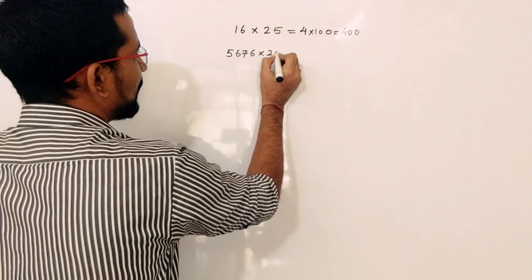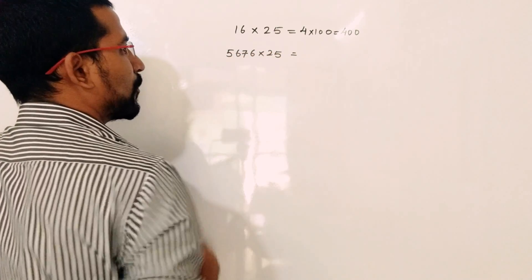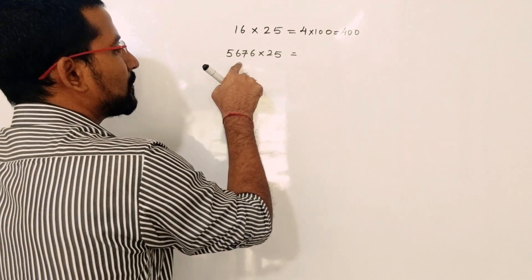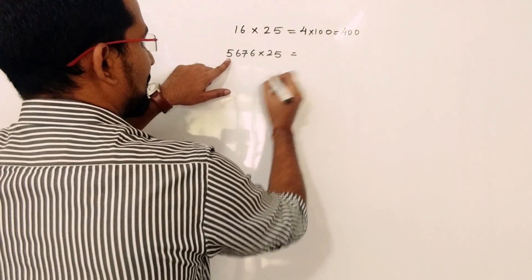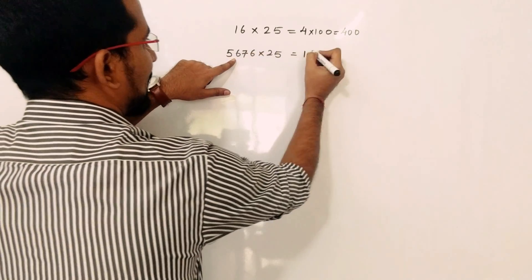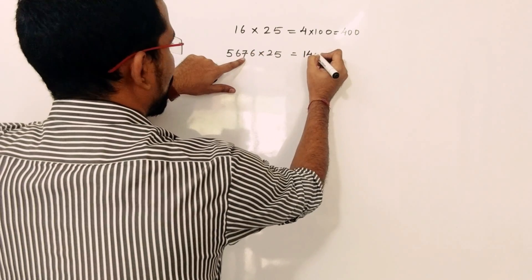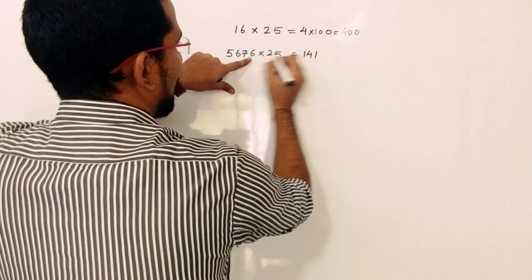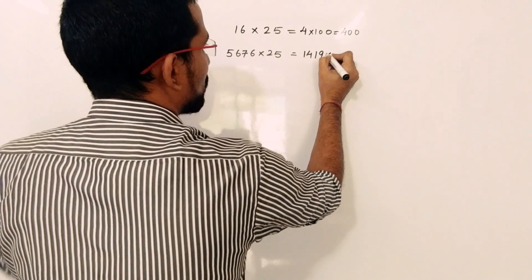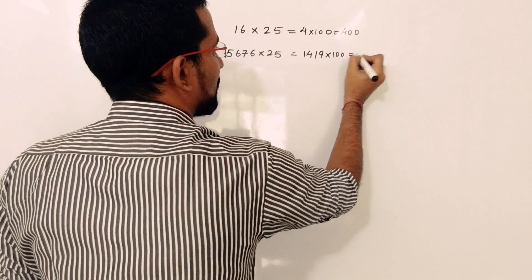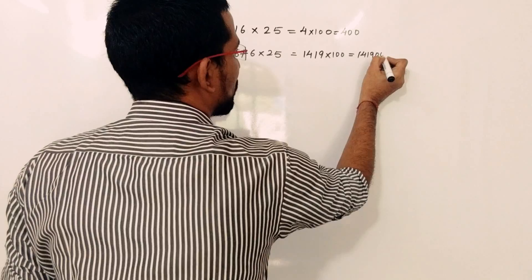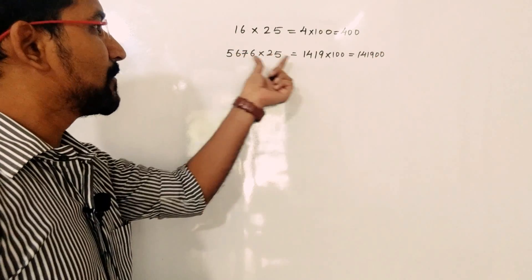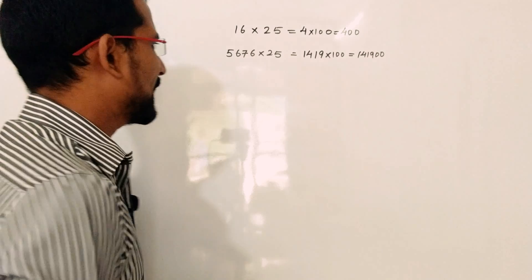Now we will take another example: 567,676 into 25. Divide this number by 4, working digit by digit with carries. The result of 567,676 divided by 4 is 141,919. Multiply by 100, giving 14,191,900. So this is the answer when we multiply 567,676 by 25.